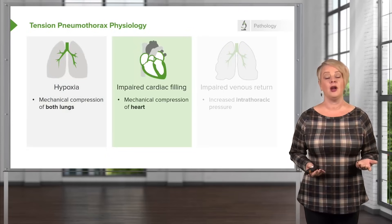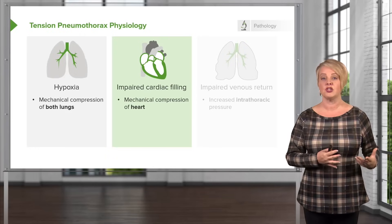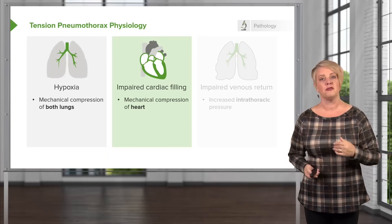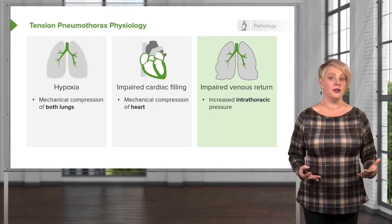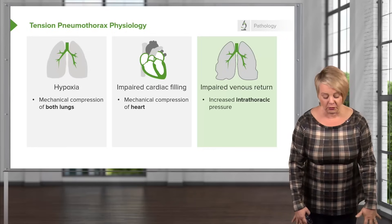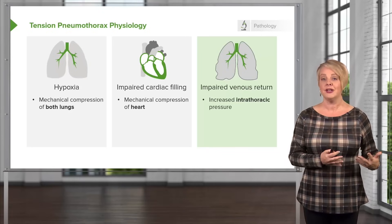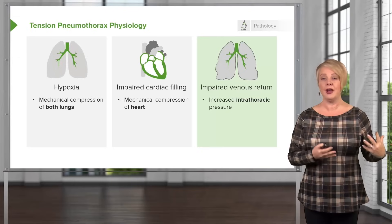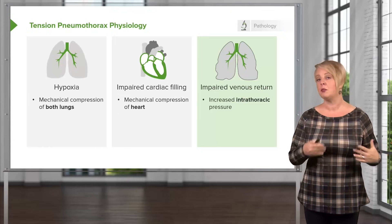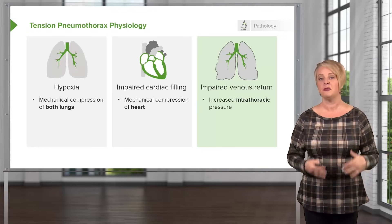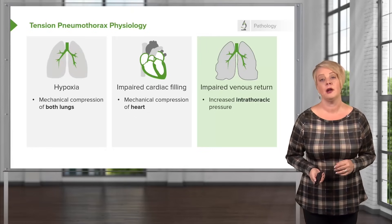You also get impaired cardiac filling, as direct compression of the mediastinum from the large air collection prevents the heart from filling normally. Additionally, there is impaired venous return. Normally, blood returns from the periphery to the central circulation via negative intrathoracic pressure. With a large high-pressure air collection in the chest, intrathoracic pressure becomes positive, eliminating the pressure gradient that drives blood back to the heart, further impairing cardiac output.